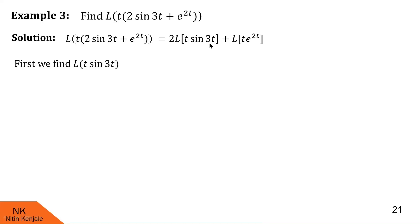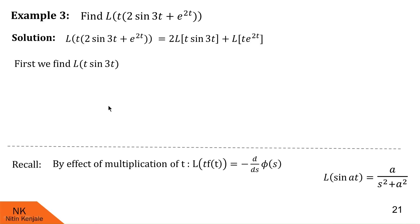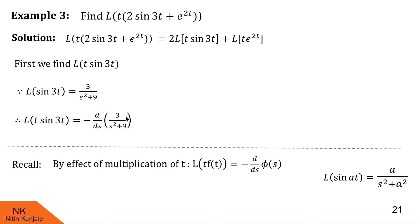Now we tackle Laplace of t into sine 3t. First, Laplace of sine 3t using the formula is 3 upon s square plus 9. Then Laplace of t into sine 3t by effect of multiplication by t is minus derivative of 3 upon s square plus 9, giving minus 3 into minus 1 upon (s square plus 9) squared into 2s, which results in 6s upon (s square plus 9) squared.